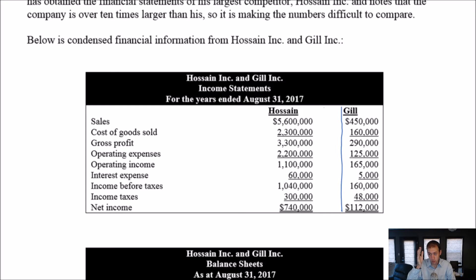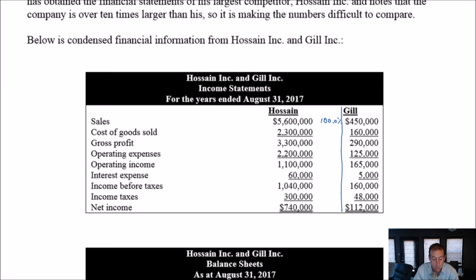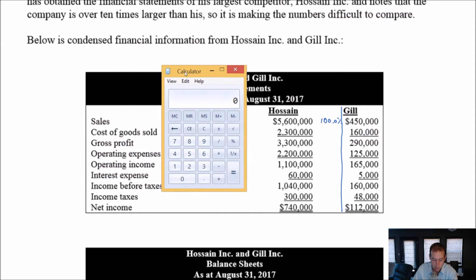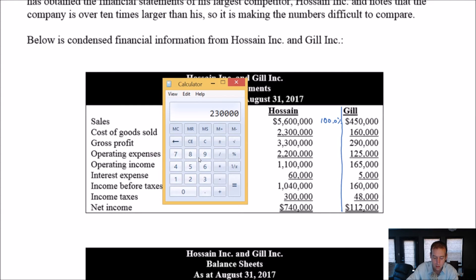I'm looking at Hossein Inc. only for now. Remember what vertical analysis is — up and down. I don't look left or right. Horizontal is comparing side by side; vertical, all my computations are up and down. Here's how it works: you set sales — the total revenue on the income statement — as 100%. Then every other number on your income statement, you compare to sales. So cost of goods sold is 2.3 million divided by sales 5.6 million — that's 41.1%. Gross profit, 3.3 million divided by 5.6 million, is 58.9%.